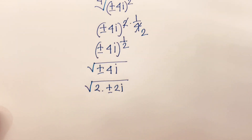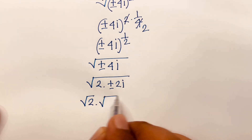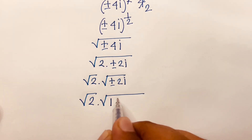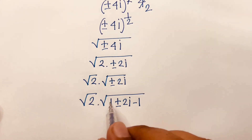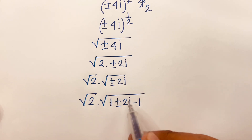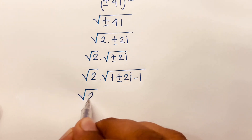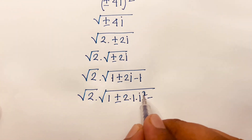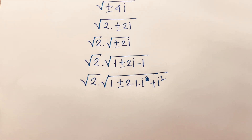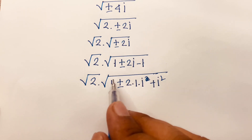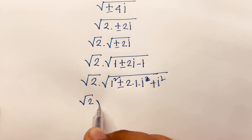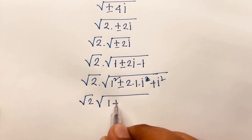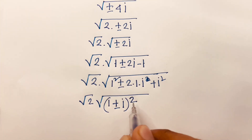This becomes √2 times √(±2i). Note that 1 - 1 = 0 and we have ±2i. So the expression is √2 times √(1 ± 2·1·i + i²), since i² = -1. We can recognize this as √2 times √(1² ± 2·1·i + i²).